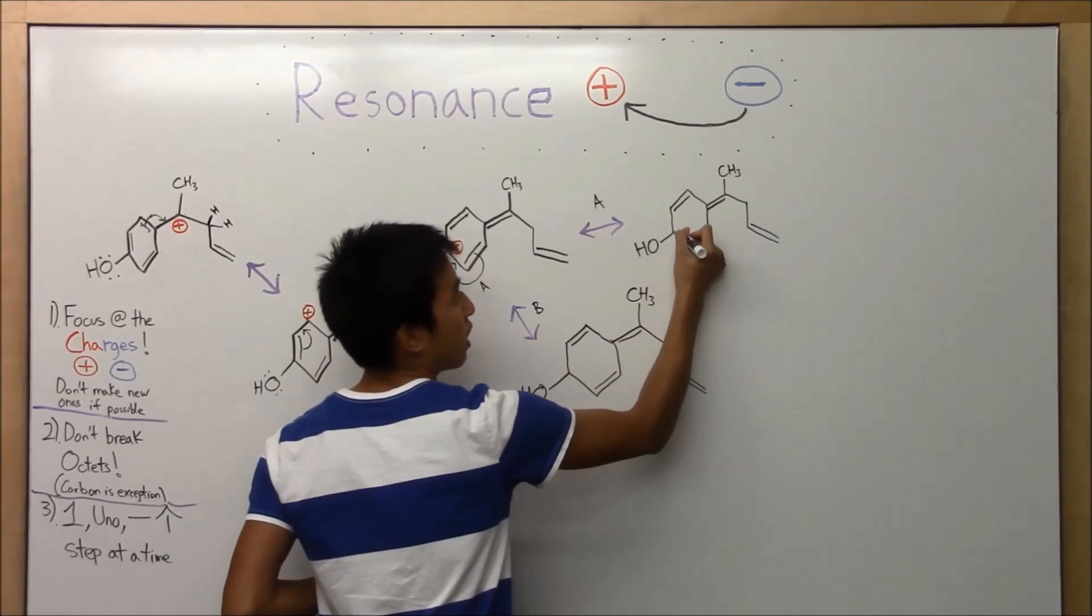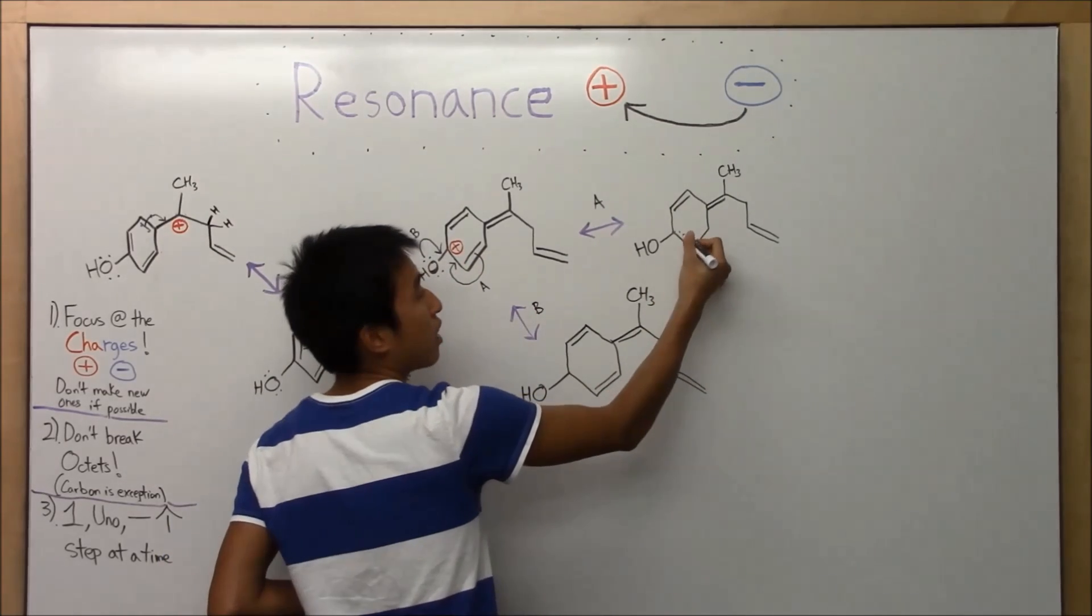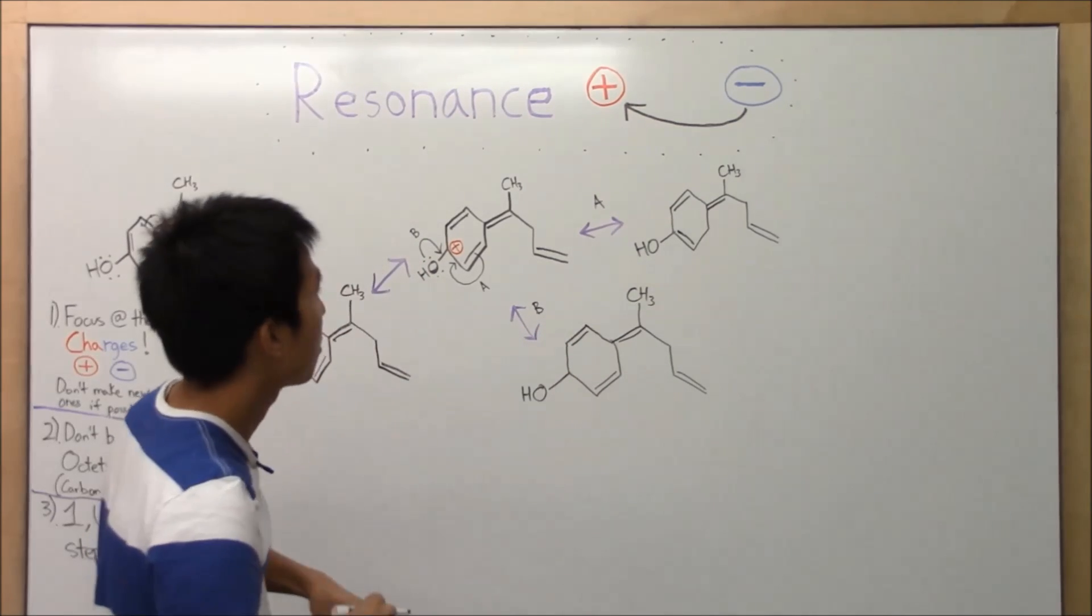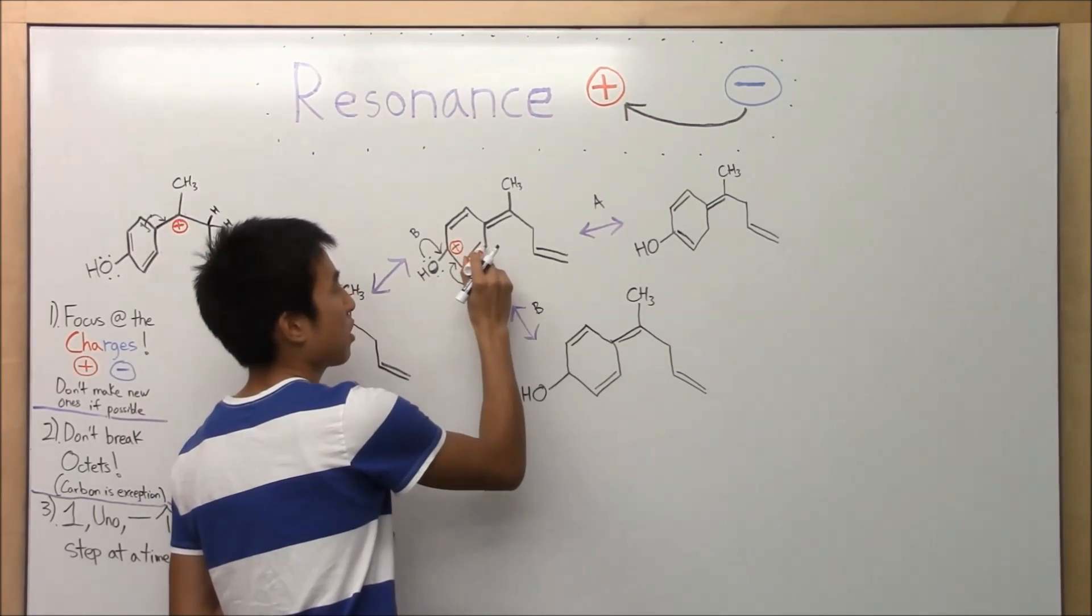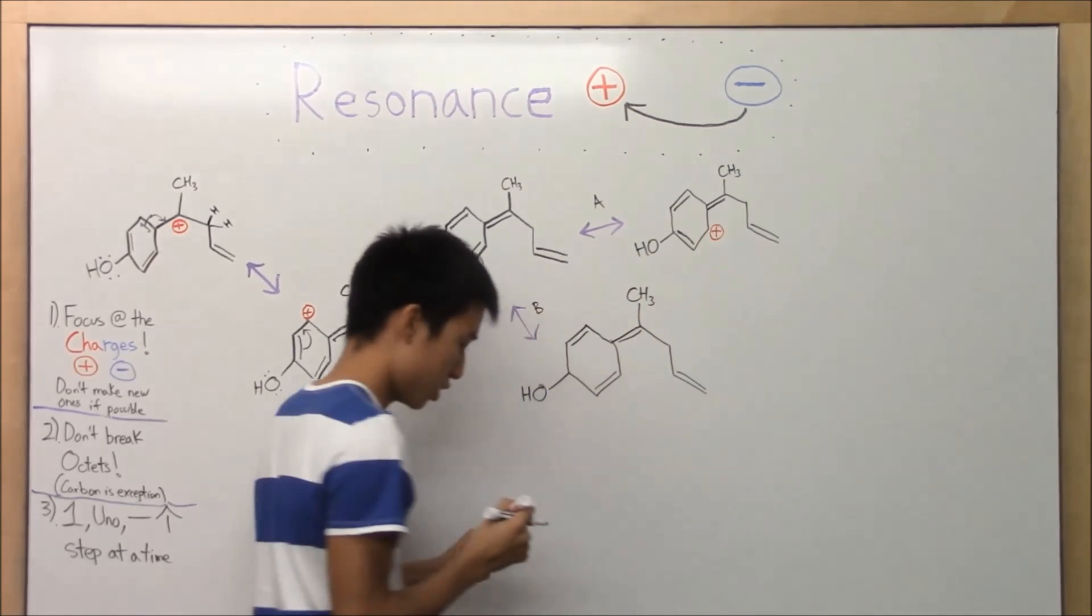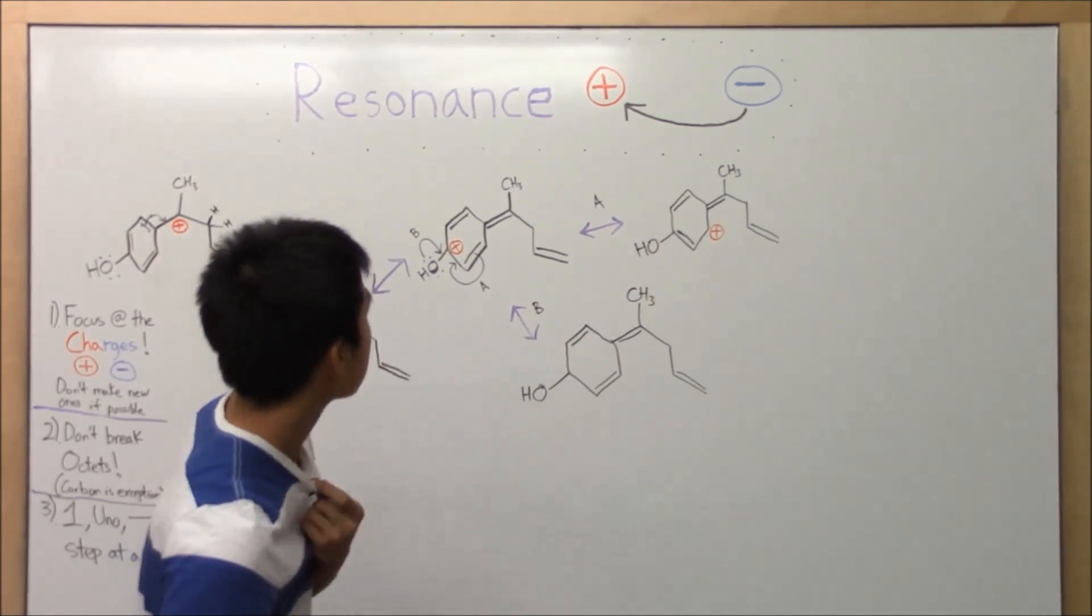So those two electrons are now here and here, and they make the pi bond. Positive charge is gone. Where did it go? Well, this carbon no longer has that electron. So, positive charge.